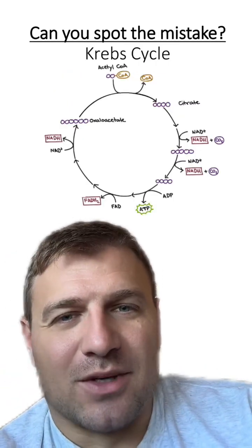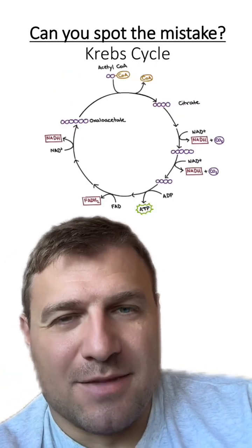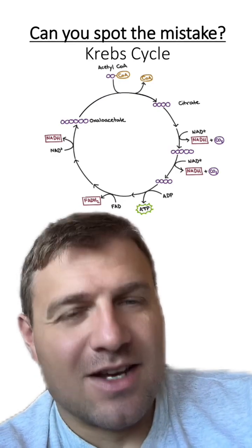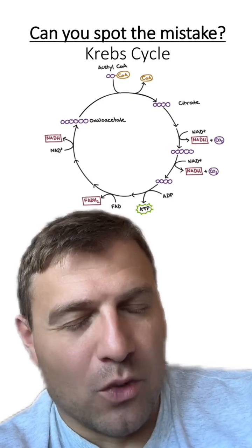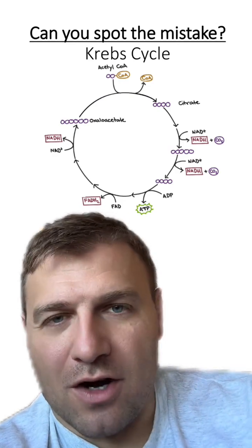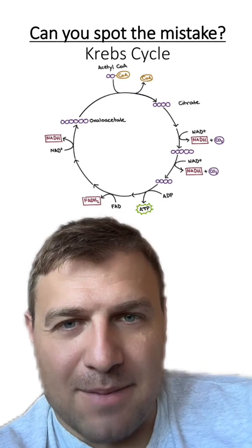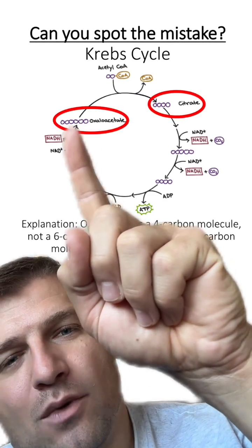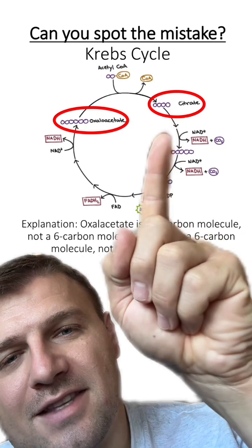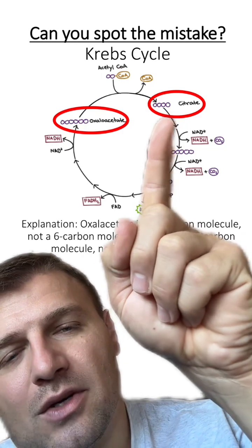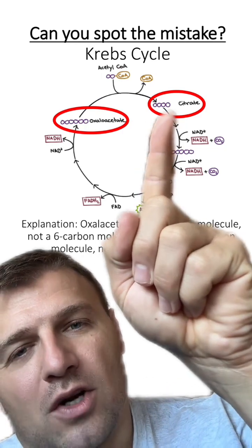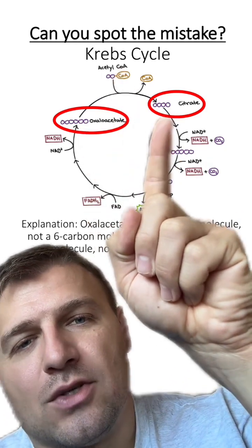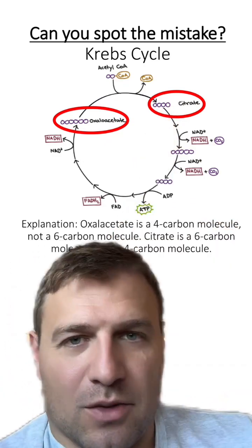Here's the Krebs cycle. Can you spot the mistake? If you need some help, I'll give you a hint — remember to count the carbons. We always focus on the carbons in these steps. Oxaloacetate isn't a six-carbon molecule; it's a four-carbon molecule. Citrate is the six-carbon molecule. Oxaloacetate will bind with acetyl-CoA to produce the citrate molecule.